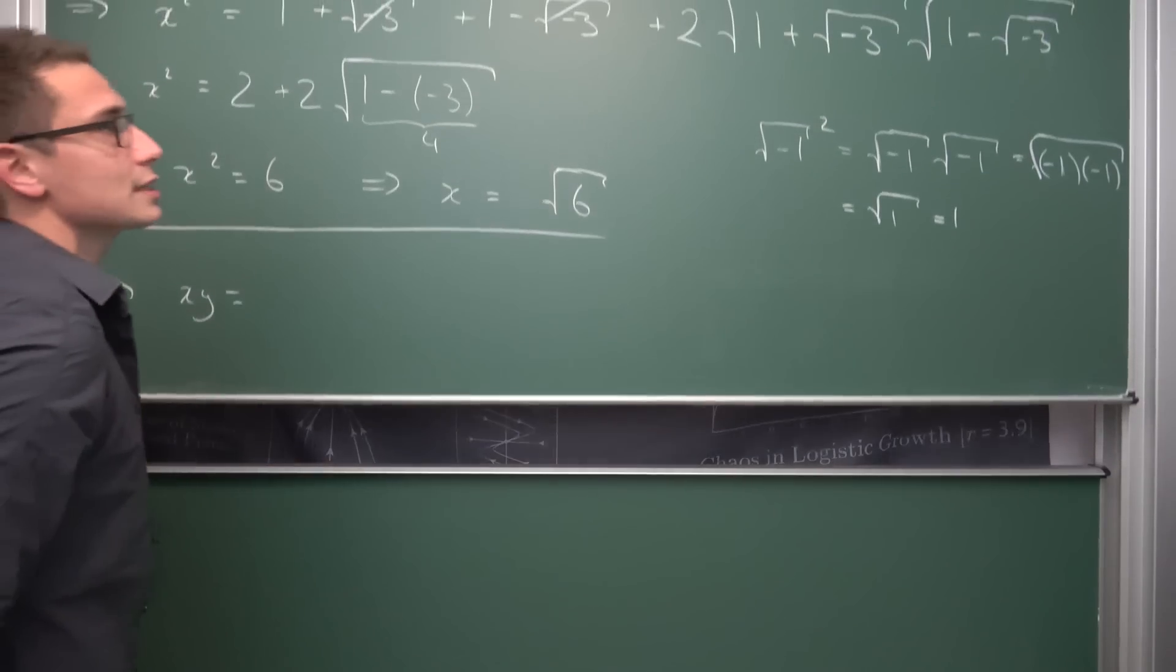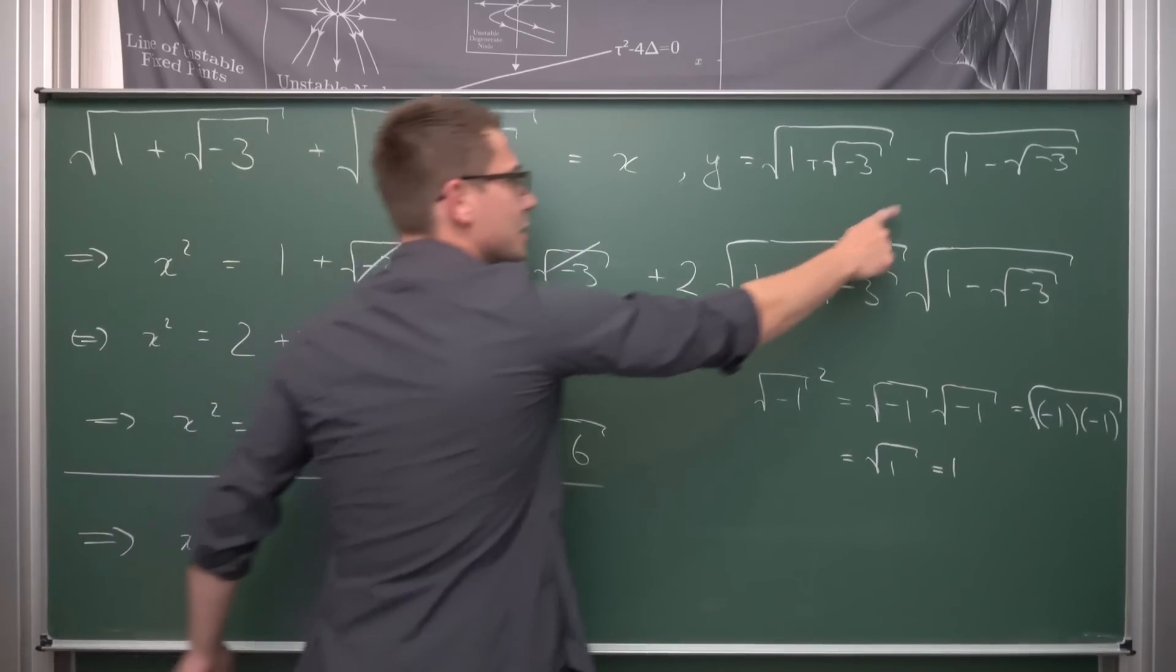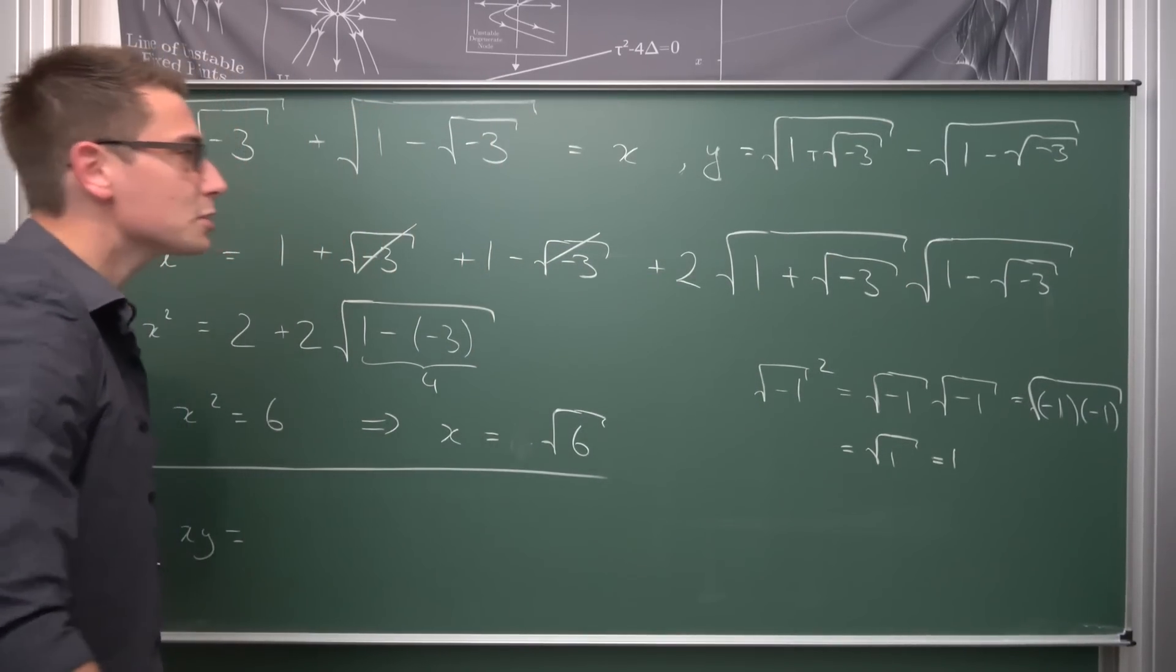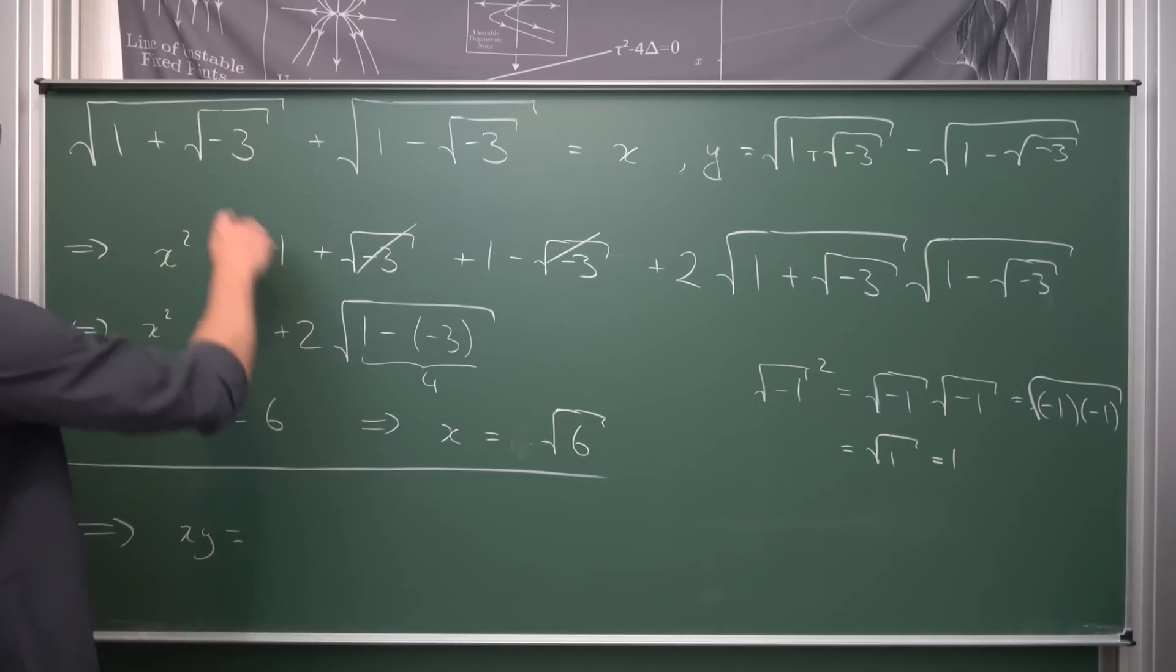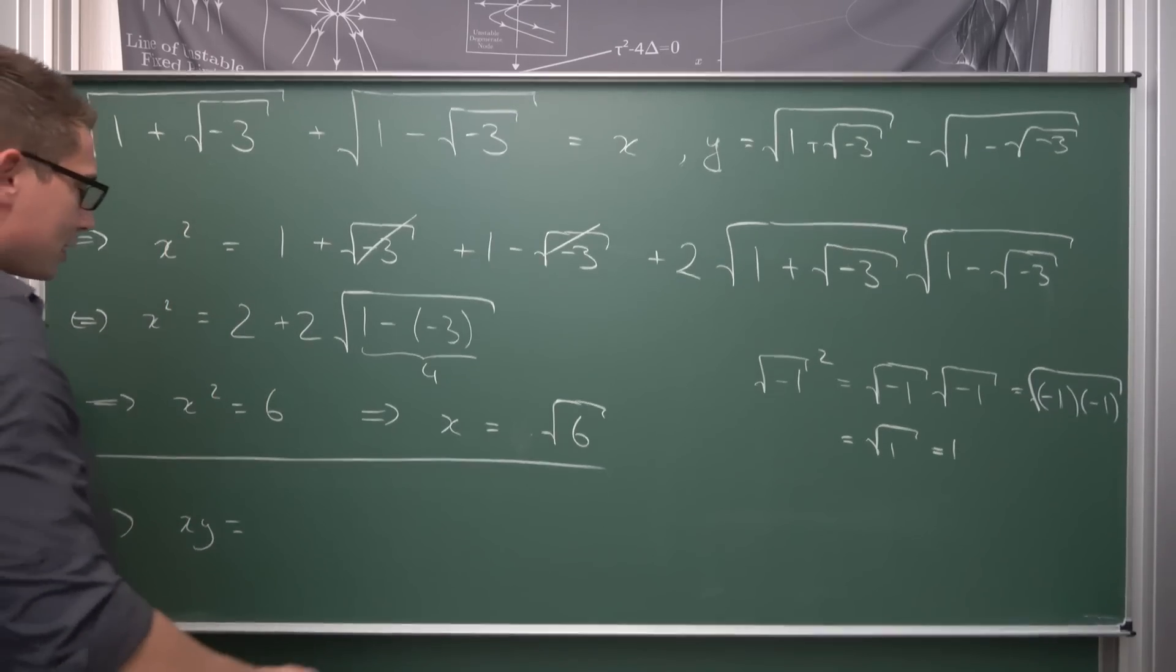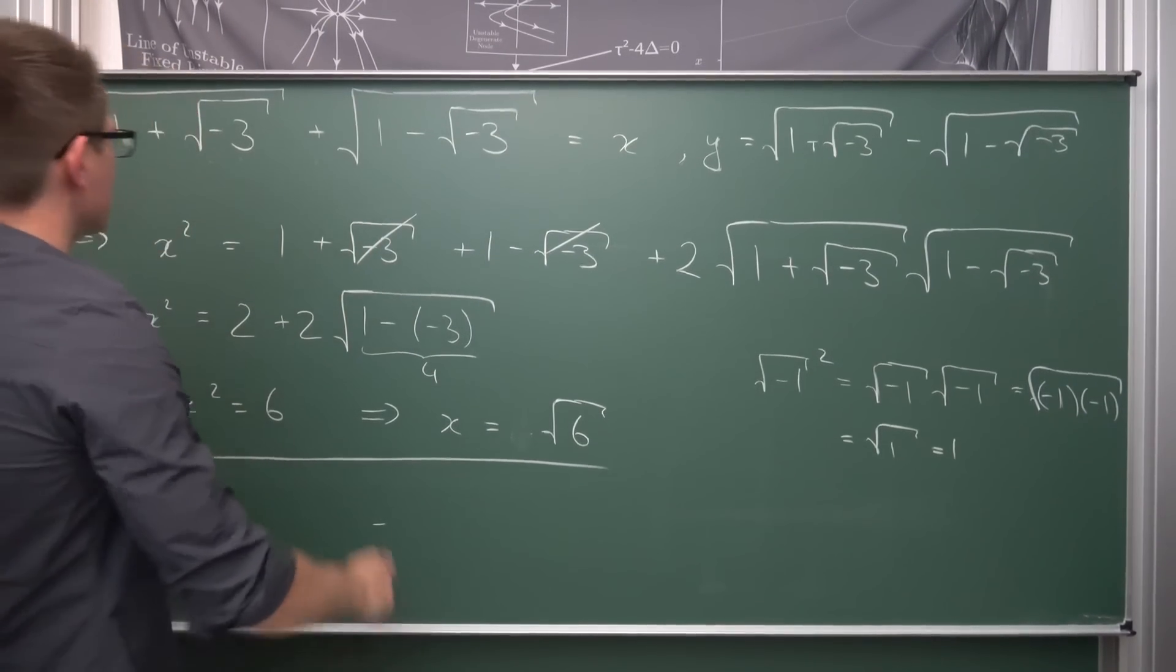That x times y, just solving a system of equations, is going to be equal to, hey, these are conjugates from one another, meaning we can make use of the difference of two squares again. Hey, this is good, difference of two squares, our good friend.